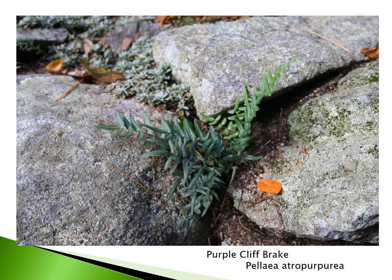Here's Pellaea atropurpurea, the purple cliff break, again — this picture is taken in a very sunny location. You can see how dense and close together the fronds are, growing in the crevice of a rock. A good plant for the rock garden and a low-growing species. I love the purple-black rachis and the beautiful gray-green foliage of this species.